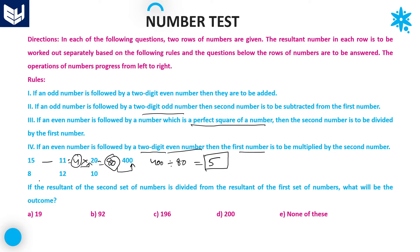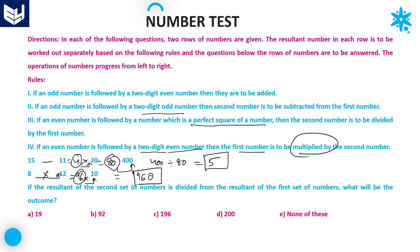Now let's see the second row. Even number followed by a two-digit even number — rule 4: both are multiplied. 8 into 12 equals 96. Again, 96 is even followed by 10, a two-digit even number, so both are multiplied again: 96 into 10 equals 960.